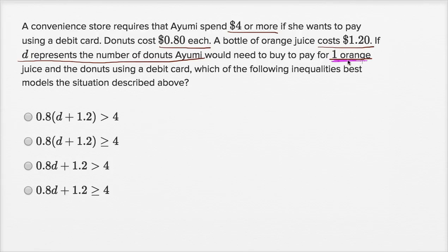So this one orange juice, that's going to be a dollar 20. We'll assume everything I'm writing is in dollars. And then how much is she gonna spend on donuts? Well, the donuts are 80 cents each, and D is the number of donuts. So she's gonna spend 80 cents times D, or 0.80D. We could write it like that, or we could just write this as 0.8D.